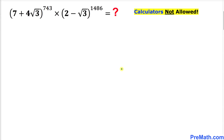Welcome to pre-math. In this video lesson we are going to find the value of a problem that involves not only radicals but also exponents. The problem is: (7 + 4√3)^743 times (2 - √3)^1486.